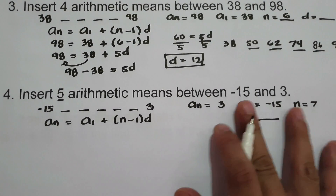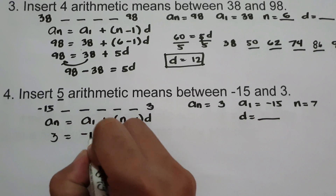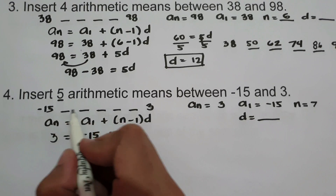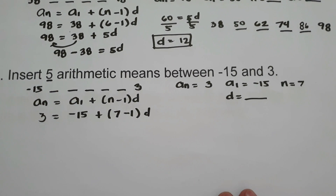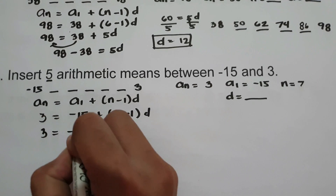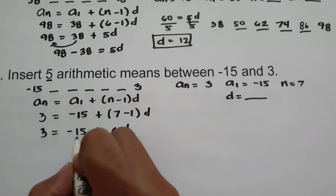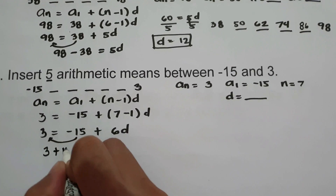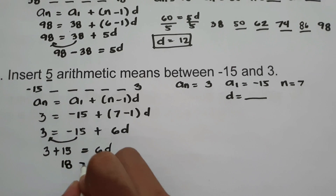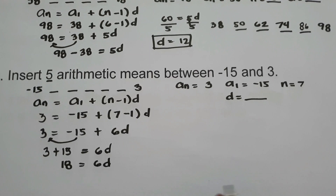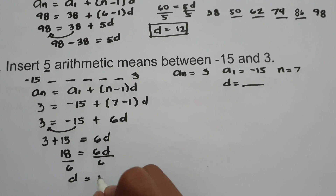Substituting: 3 equals negative 15 plus 7 minus 1 times d, giving 3 equals negative 15 plus 6d. Moving negative 15 to the other side: 3 plus 15 equals 6d, so 18 equals 6d. Dividing both sides by 6, the common difference is 18 divided by 6, which is 3.